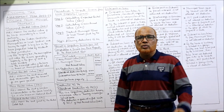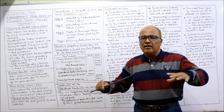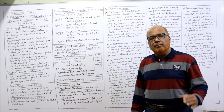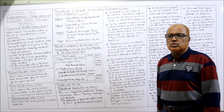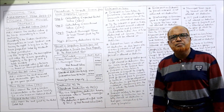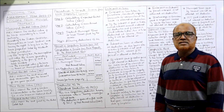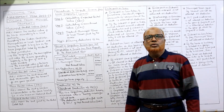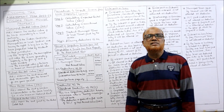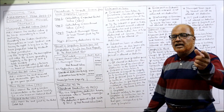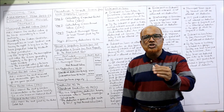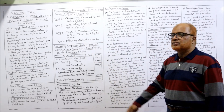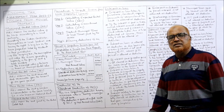Annual value is computed by considering these four values: MRV, FRV, ARV, and SRV. The procedure to compute income from house property for let-out houses involves four steps: first, calculate the expected rental value (ERV); second, calculate the gross annual value (GAV); third, deduct municipal taxes or local taxes from GAV to get net annual value (NAV); fourth, deduct the deductions allowed under Section 24 to get income from house property.